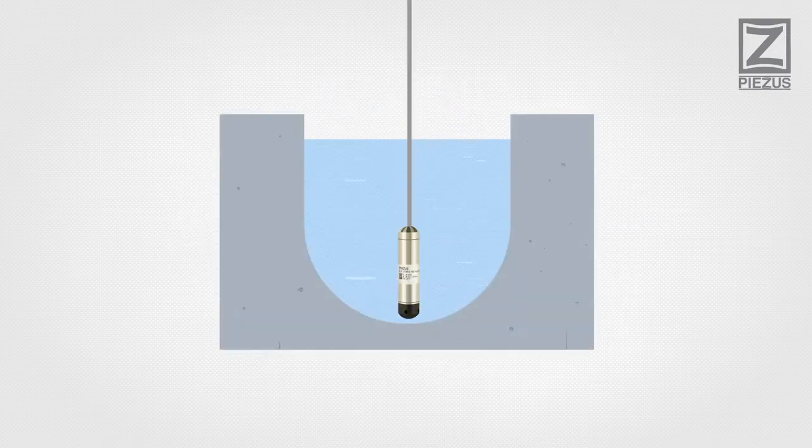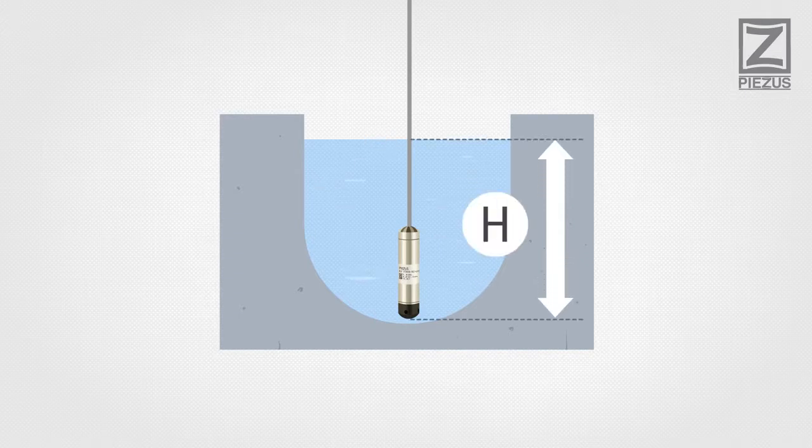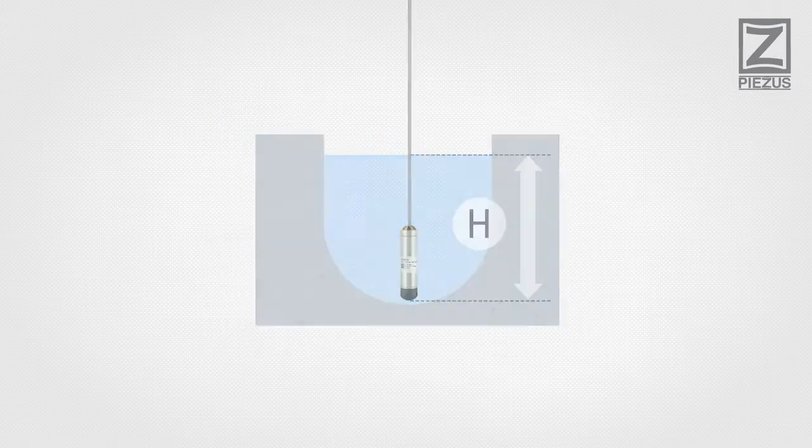Submersible pressure transmitters are used to measure level of liquids. They are also called hydrostatic level transmitters.